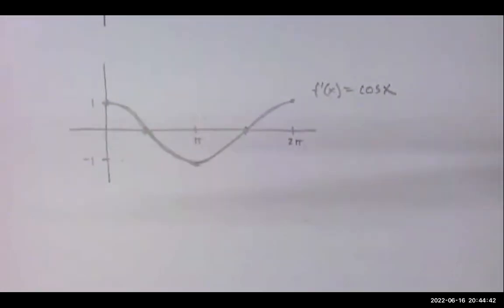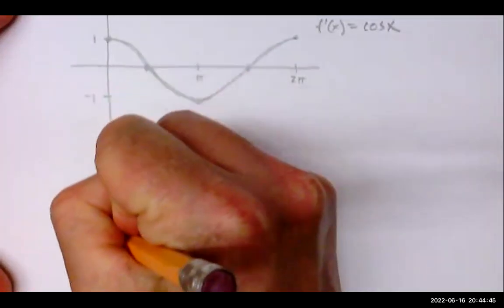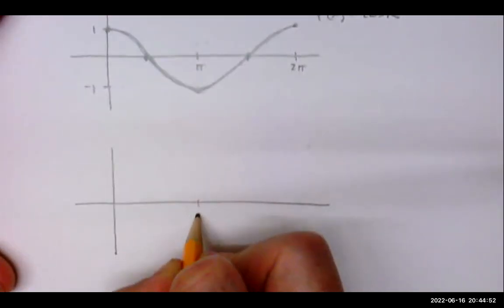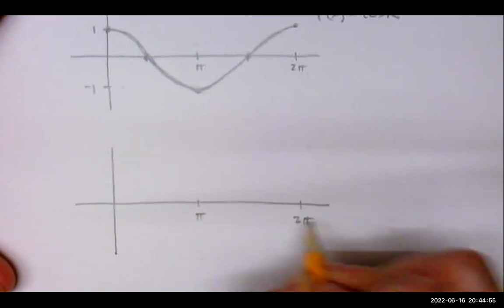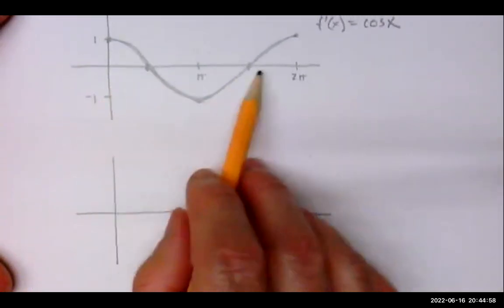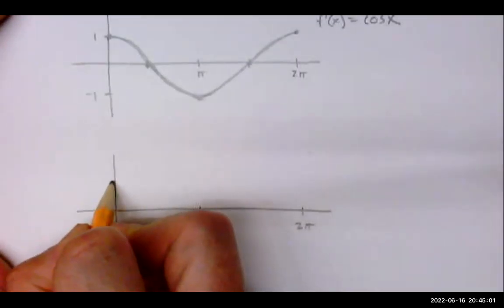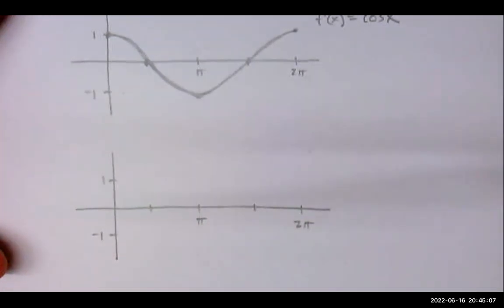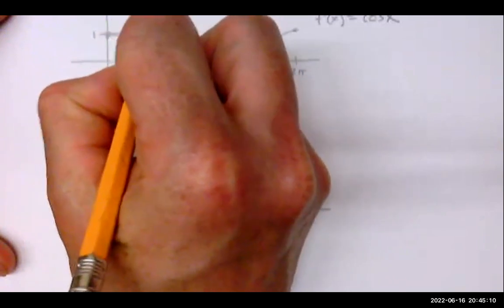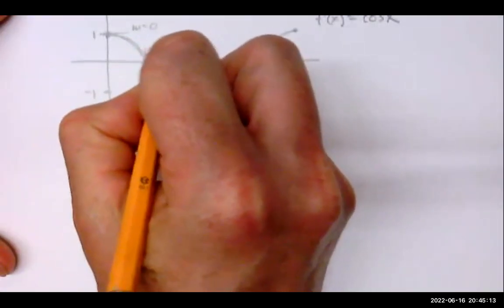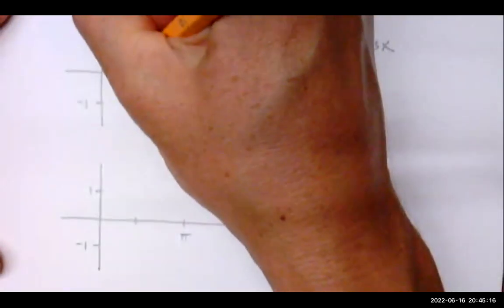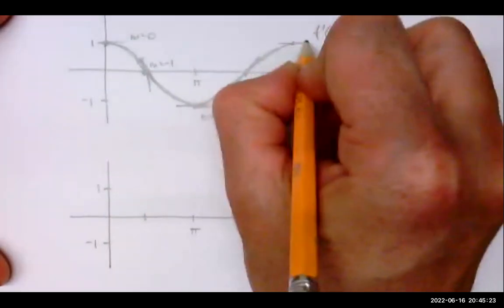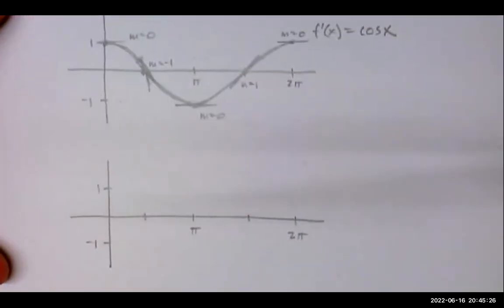Let's create one more of these graphs. I'll give you a hint—these slopes are negative one and positive one. We've got a slope of zero here, a slope of negative one here, m equals zero, m equals one, and m equals zero again.